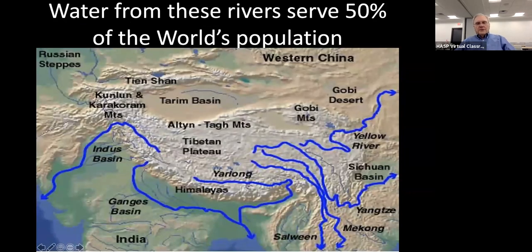This slide is interesting insofar as it contains 50 percent of the world's population. Looking at the rivers — here's the Indus River, the Ganges, and the Brahmaputra River — but also look at China and Indonesia. These rivers also furnish a lot of water and as a consequence people live near the rivers, so 50 percent of the world's population is in this area.